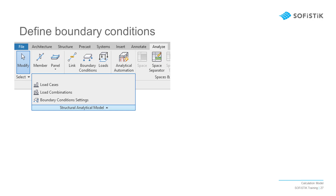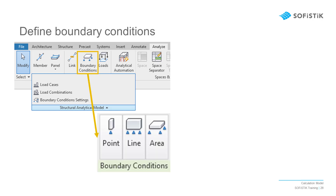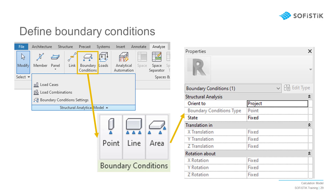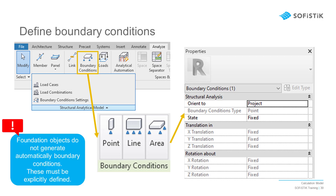Boundary conditions can be created via the Revit Analysis menu under the command Boundary Condition. In the corresponding Revit properties menu, you can set the detailed conditions for each degree of freedom. A particular pitfall is with foundation objects — these do not automatically generate a boundary condition. This is actually good, as you might prefer to choose which type of support condition should represent the foundation. So don't forget to define supports at all your foundation objects.